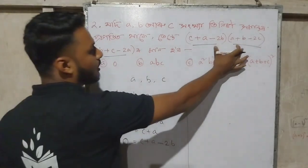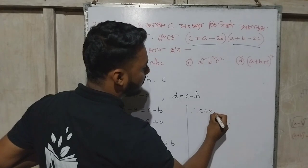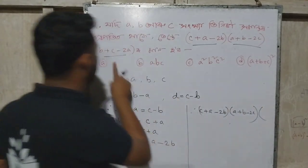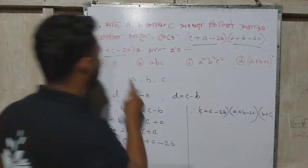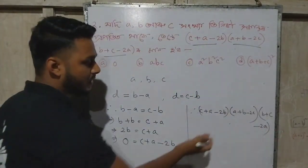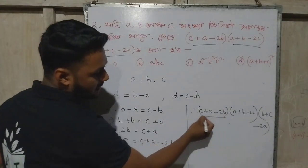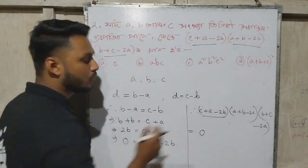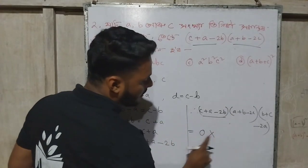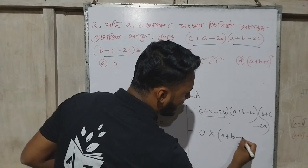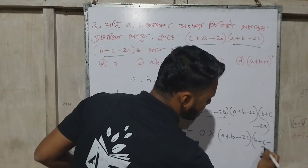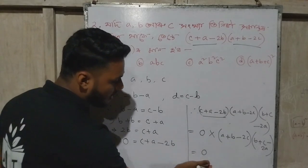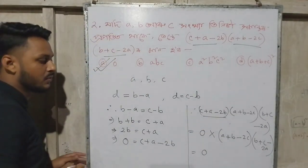So c plus a minus 2b equals 0. Similarly, a plus b minus 2c and b plus c minus 2a also follow. So the answer is: c plus a minus 2b equals 0. So the answer is 0, and option A is the correct answer.